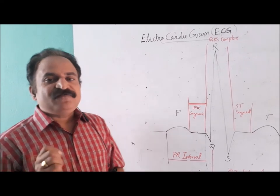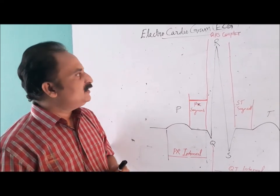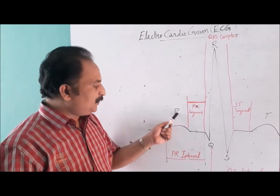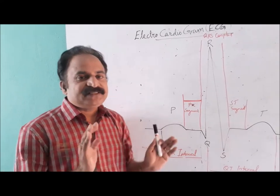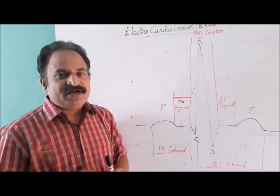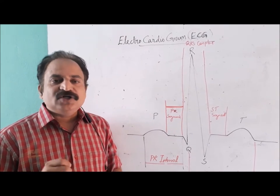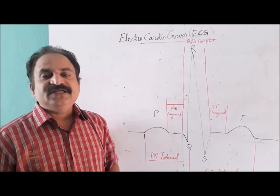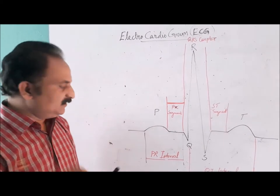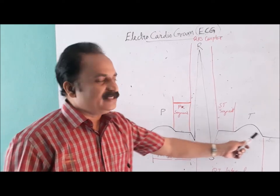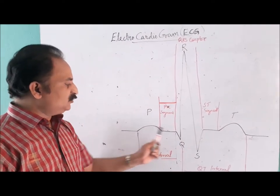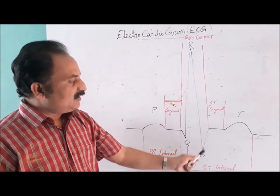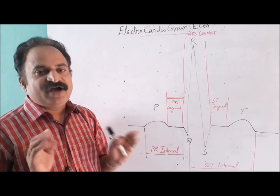We can see the five waves or deflections of ECG, which are conventionally designated as P, Q, R, S, and T. The five waves have a horizontal part at the beginning as well as in between, called the isopotential or baseline.